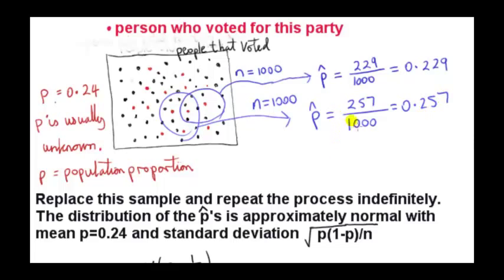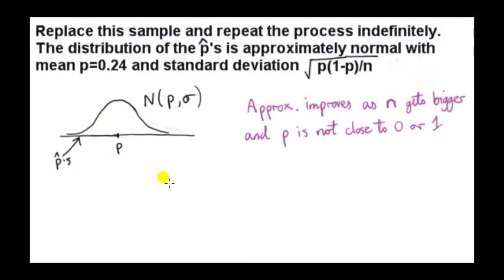We do this process indefinitely, sampling with replacement. Let's pretend that we have all these estimates P hat of the unknown population proportion P and indicate them along this horizontal line. As we might expect, a lot of them will be in or around P.